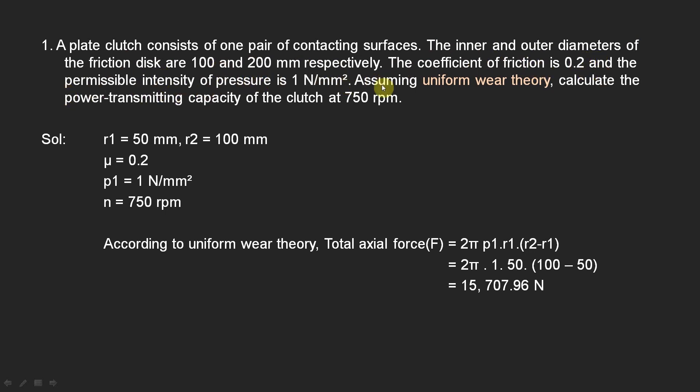Assuming uniform wear theory, calculate the power transmitting capacity of the clutch at 750 rpm. This is the data given: inner diameter is 100 mm, so inner radius is 50 mm, and similarly outer diameter is 200 mm, so outer radius is 100 mm.